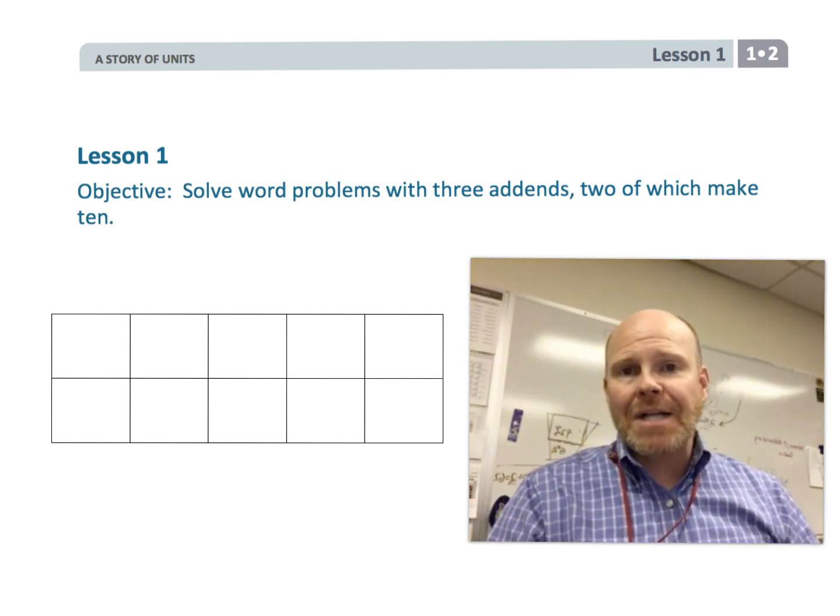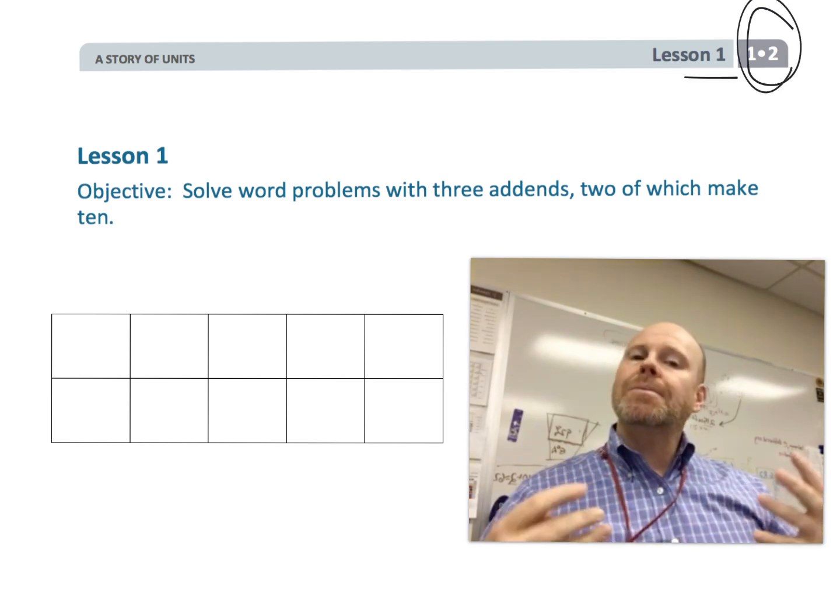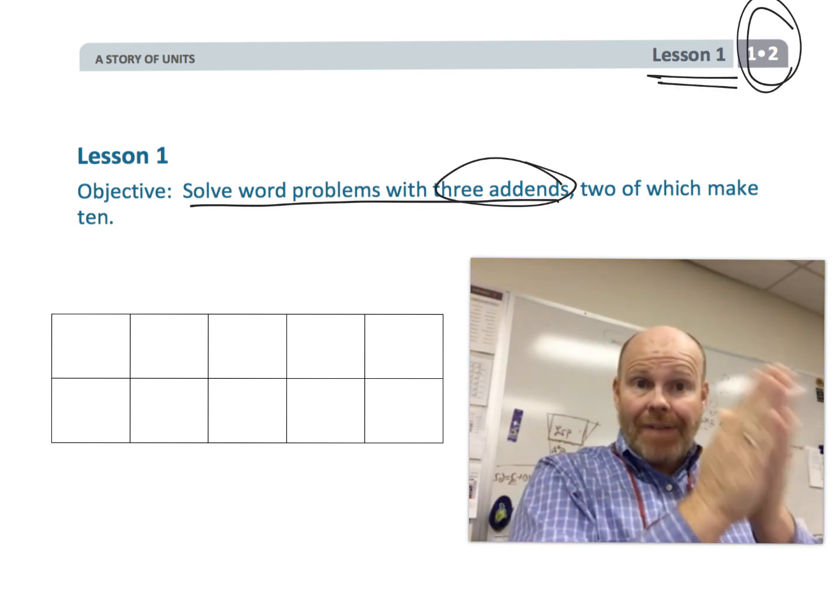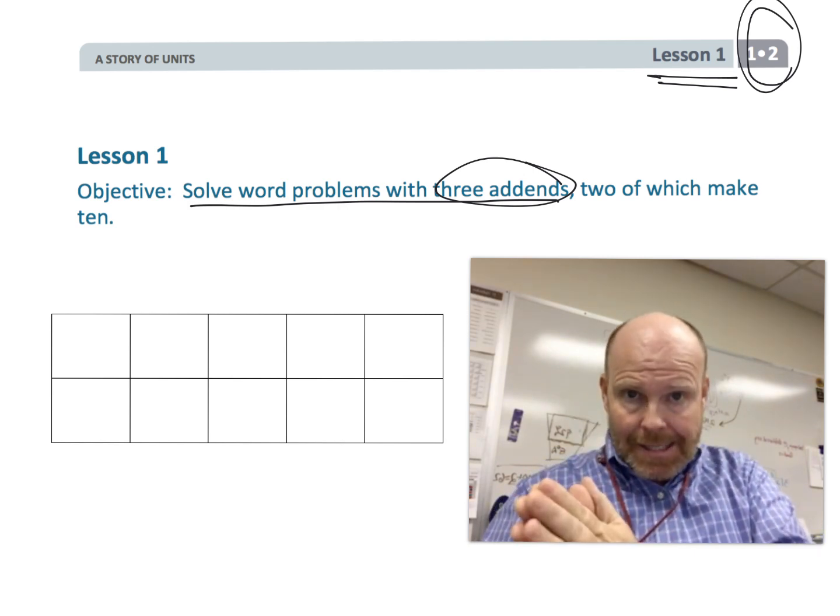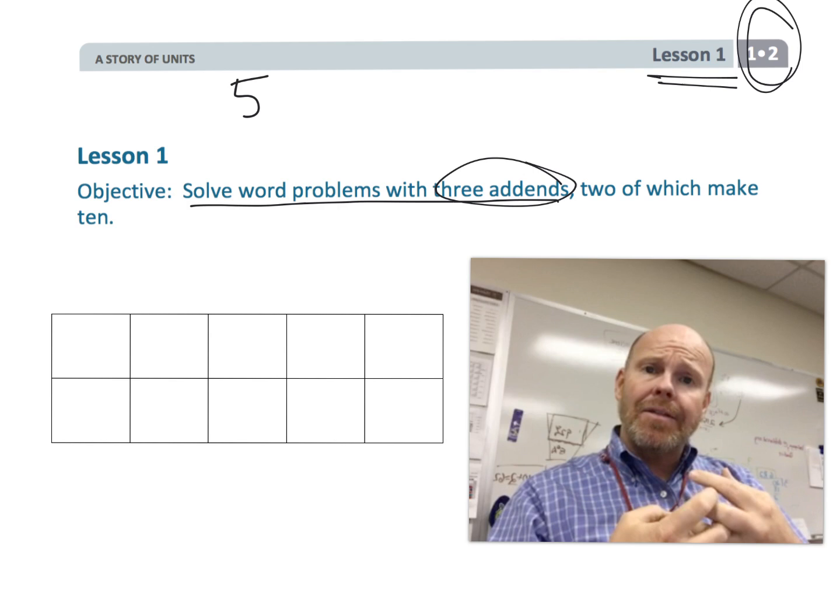Alright, this is first grade module two, lesson one. In this lesson, students are going to be solving word problems with three addends, so it's like five plus two plus eight. And the big thing is two of those addends are going to add together to make ten.